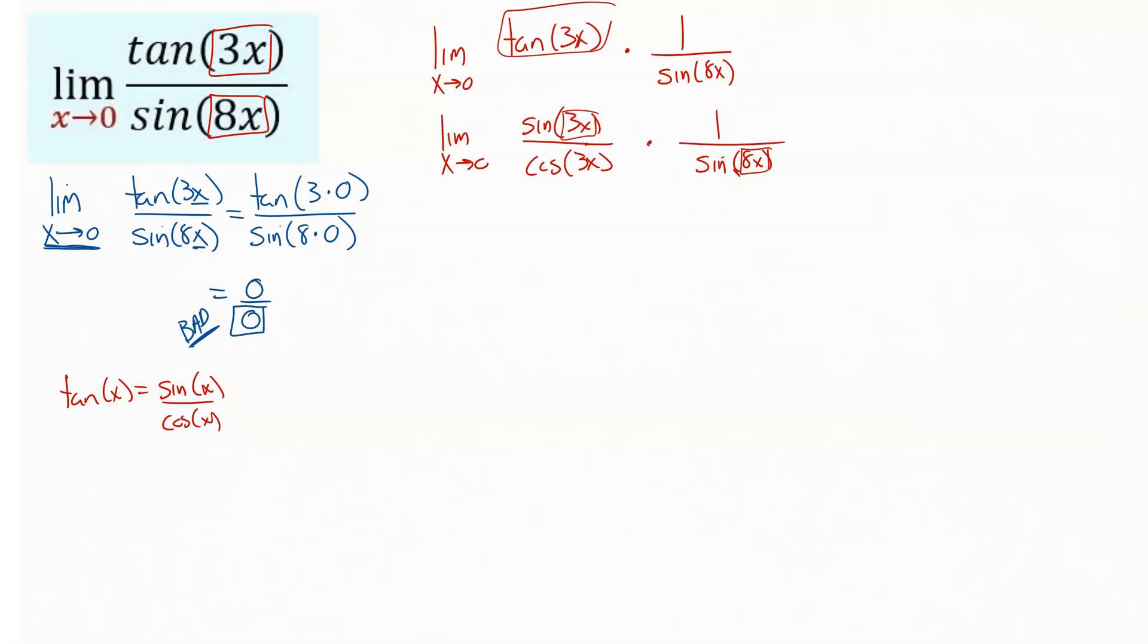When you see all these sine functions going on in a problem, there's a limit definition that they give you that should be jumping out at you, sort of bells and whistles. And that definition says the limit as x approaches 0 of sine x over x is equal to 1. And it's this little definition here that's going to help us out. It works both ways. So you could have limit as x approaches 0 of x over sine x, and that also would equal 1.